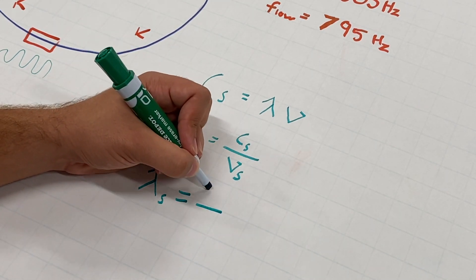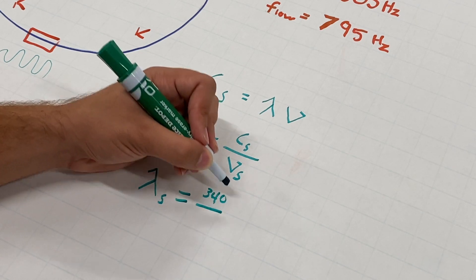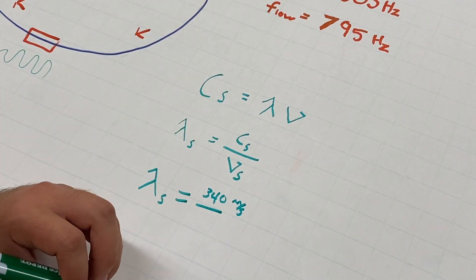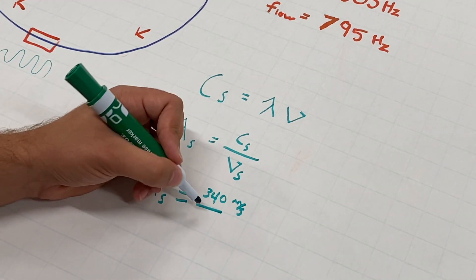The accepted speed of sound is 340 meters per second. And the nu that we got for our source is 800 hertz.